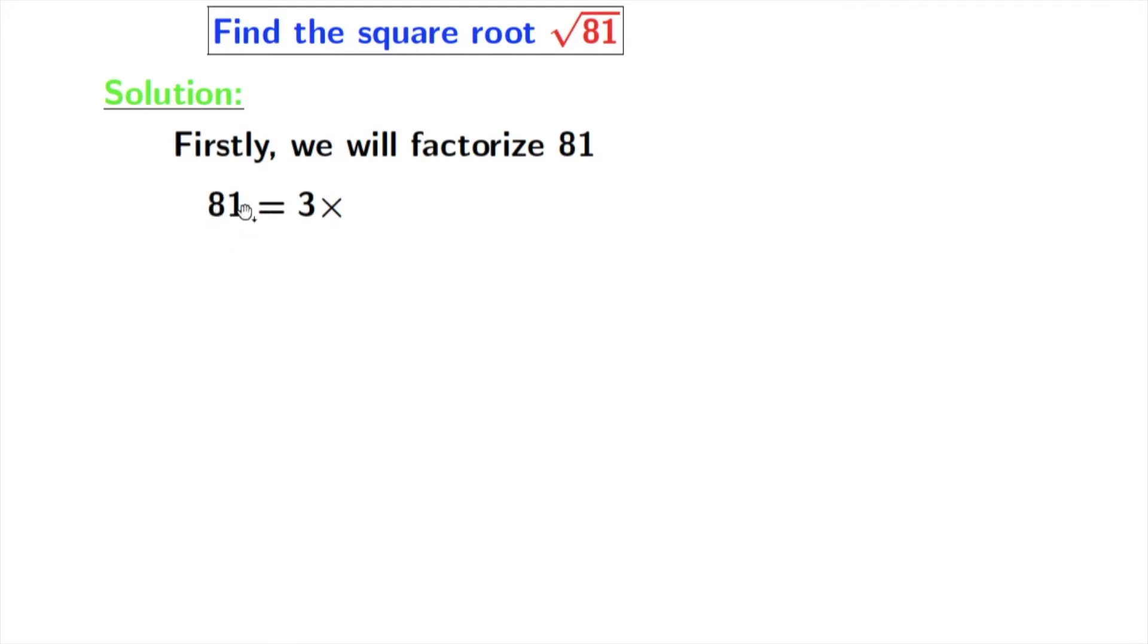This gives us 3 times 27. Again, we have to factorize 27, and we know that 27 is equal to 3 times 9.